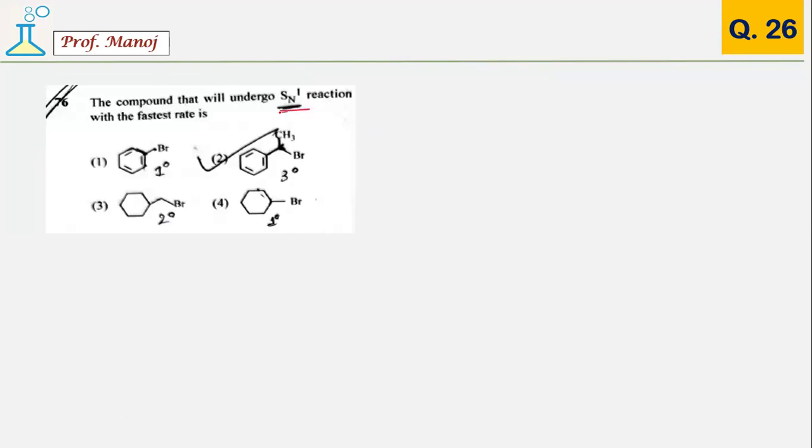Based on SN1 mechanism, they asked a question. As you know, SN1 reaction happens for tertiary greater than secondary, greater than primary. When you see the particular compound, the only one which you can find reacting will be number 2 option.